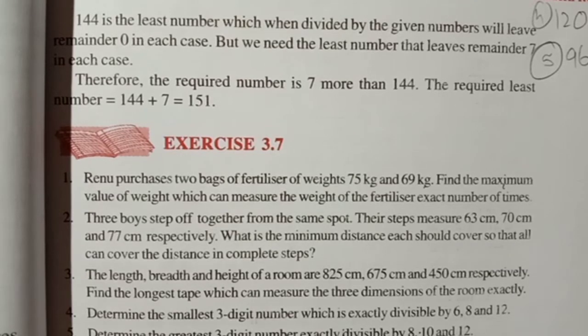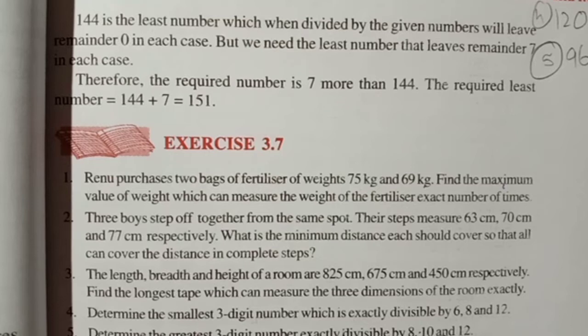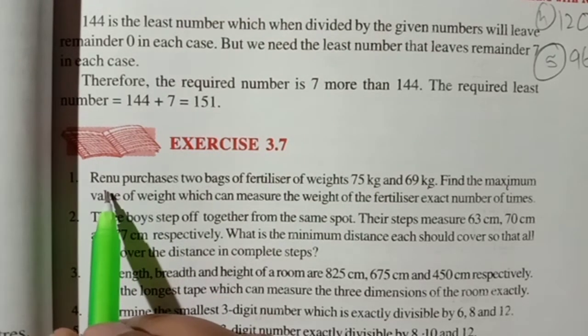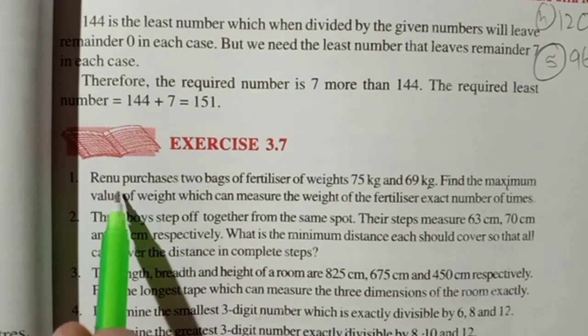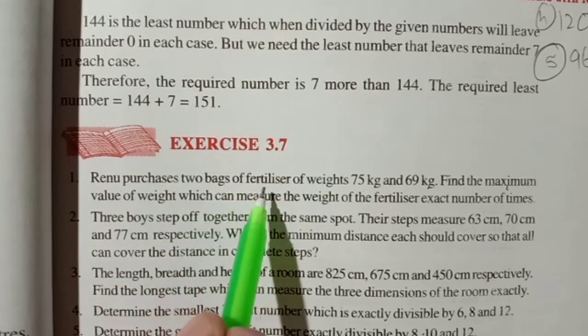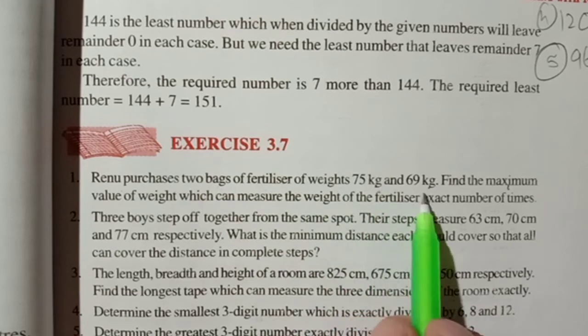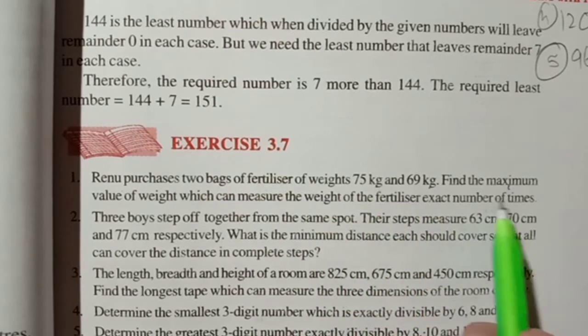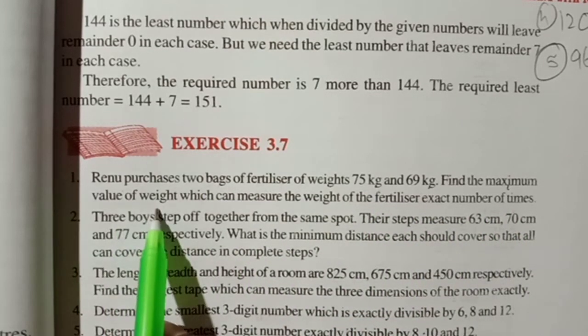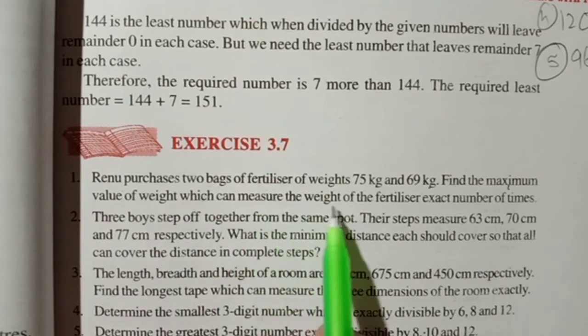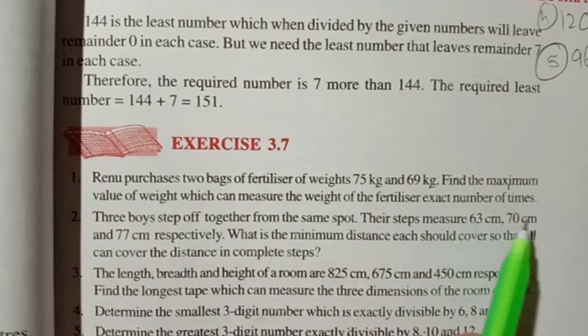Hello students, I am going to start with exercise 3.7. So, the first question: Renu purchases two bags of fertilizer of weights 75 kg and 69 kg. Find the maximum value of weight which can measure the weight of the fertilizer exact number of times.